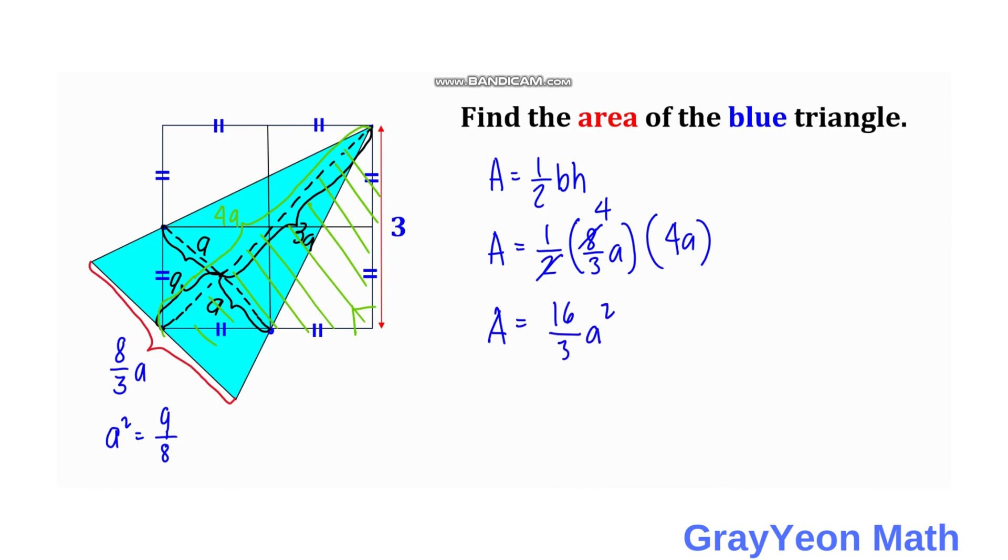So we have area is equal to 16 over 3a squared. But a squared is equal to 9 over 8, so area is equal to 16 over 3 times 9 over 8, so we have this 3 and this is 2, so we have the area to be equal to 3 times 2 which is 6 square units.